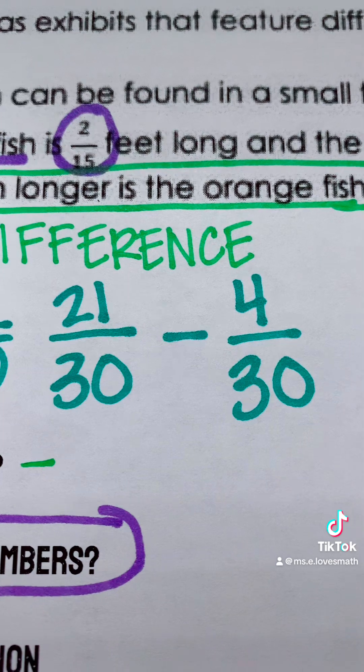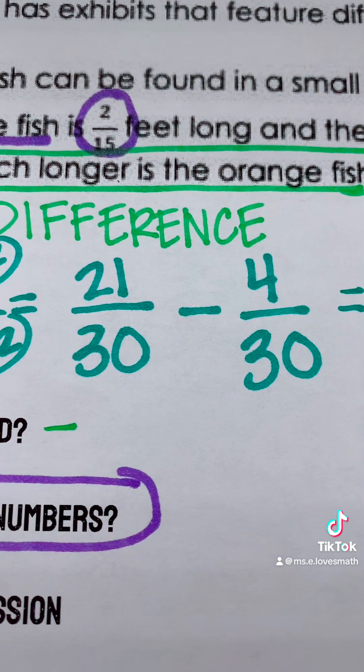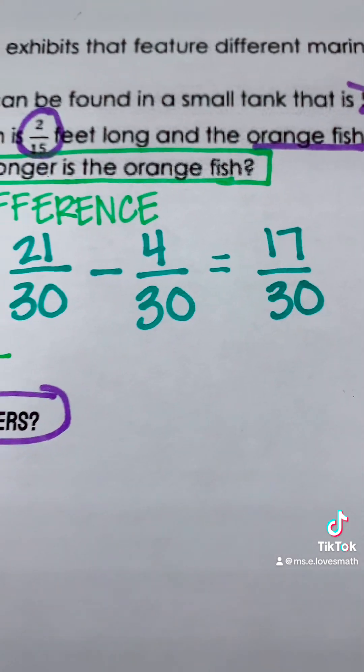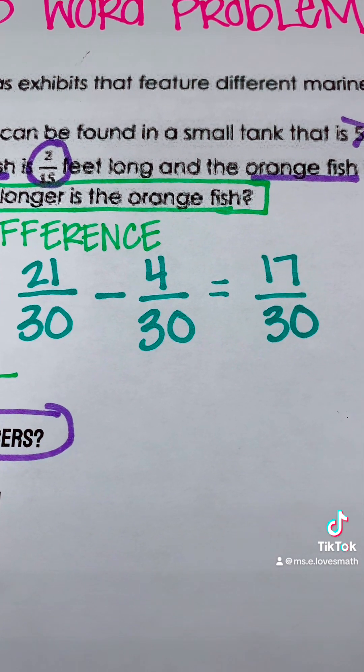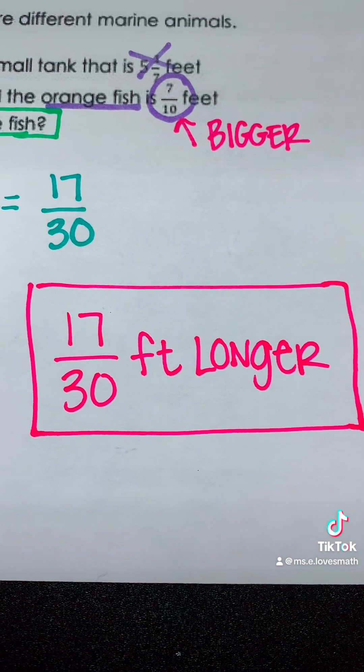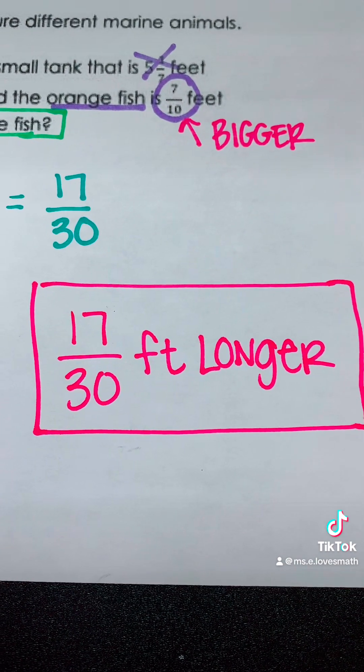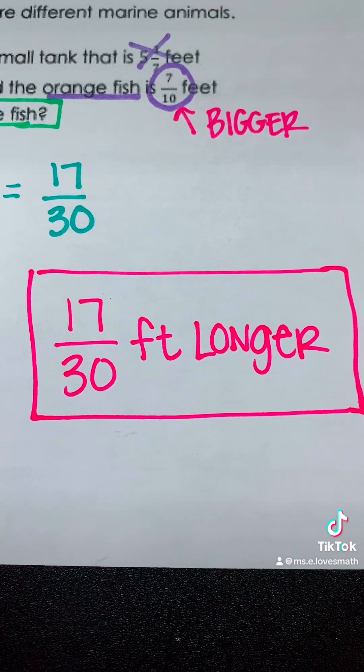So now we are ready to subtract. 21 minus 4 is 17. You keep the denominator the same. 17 over 30 cannot be simplified, so that means the orange fish is 17/30 feet longer than the blue fish.